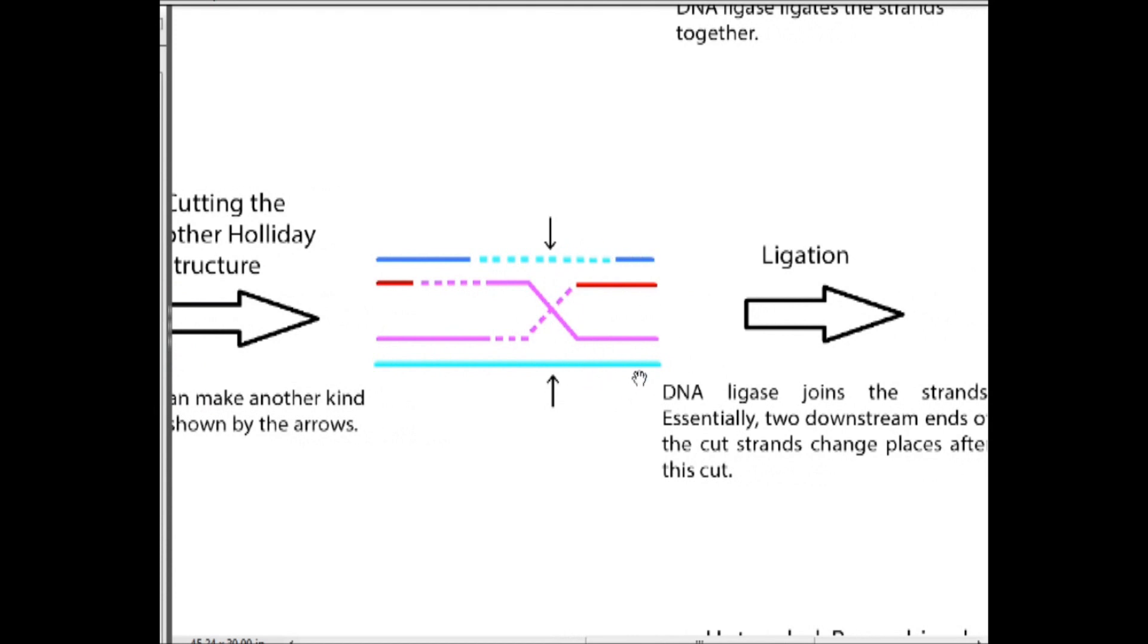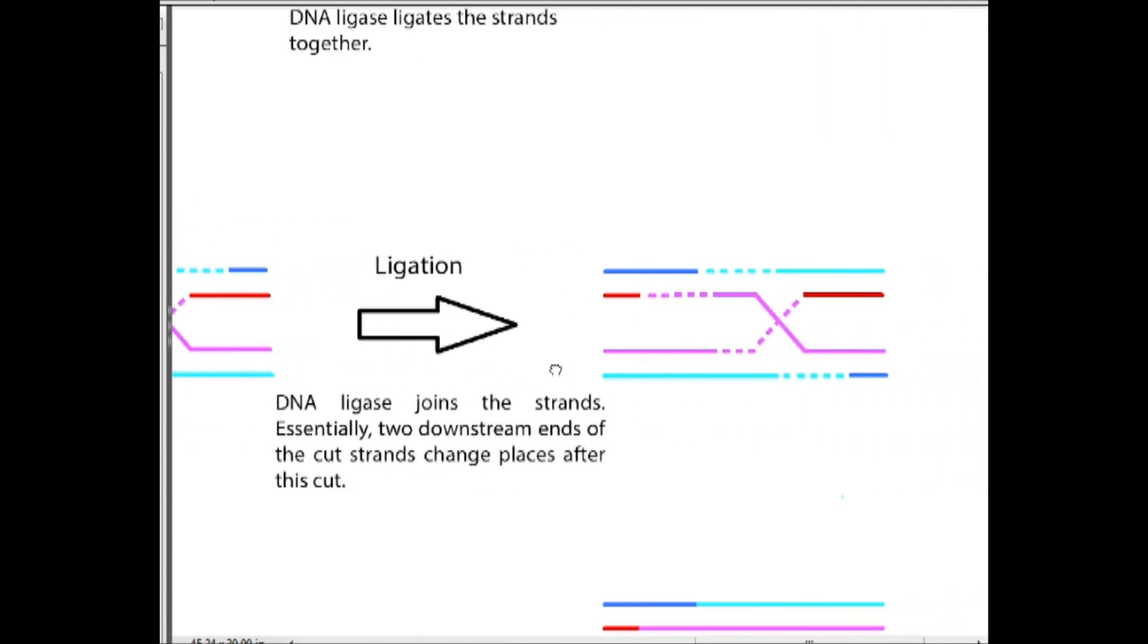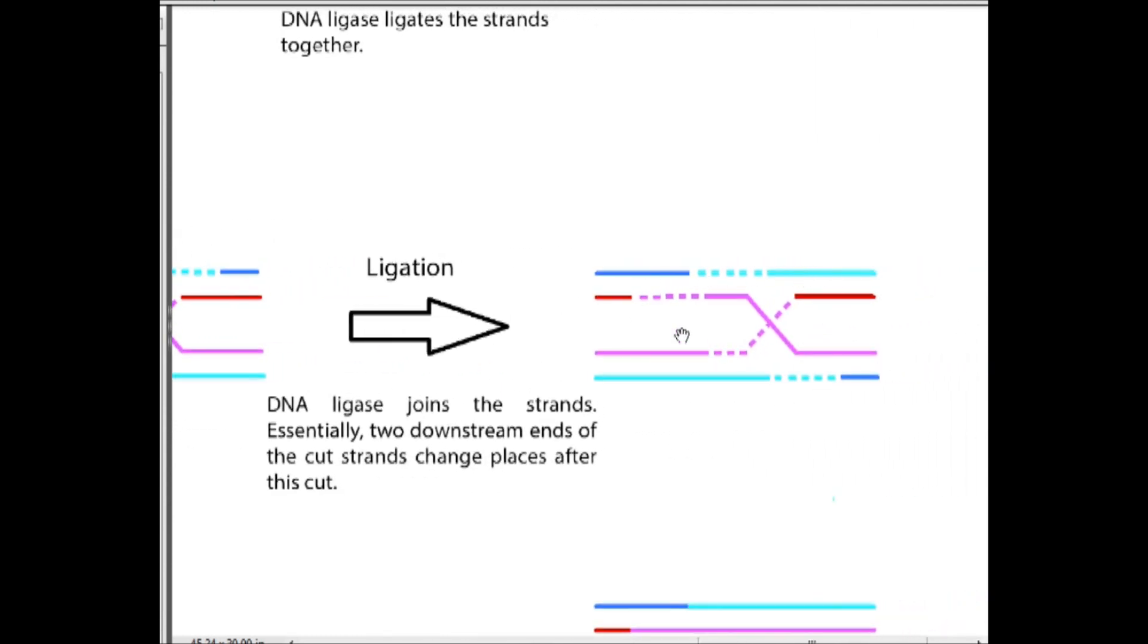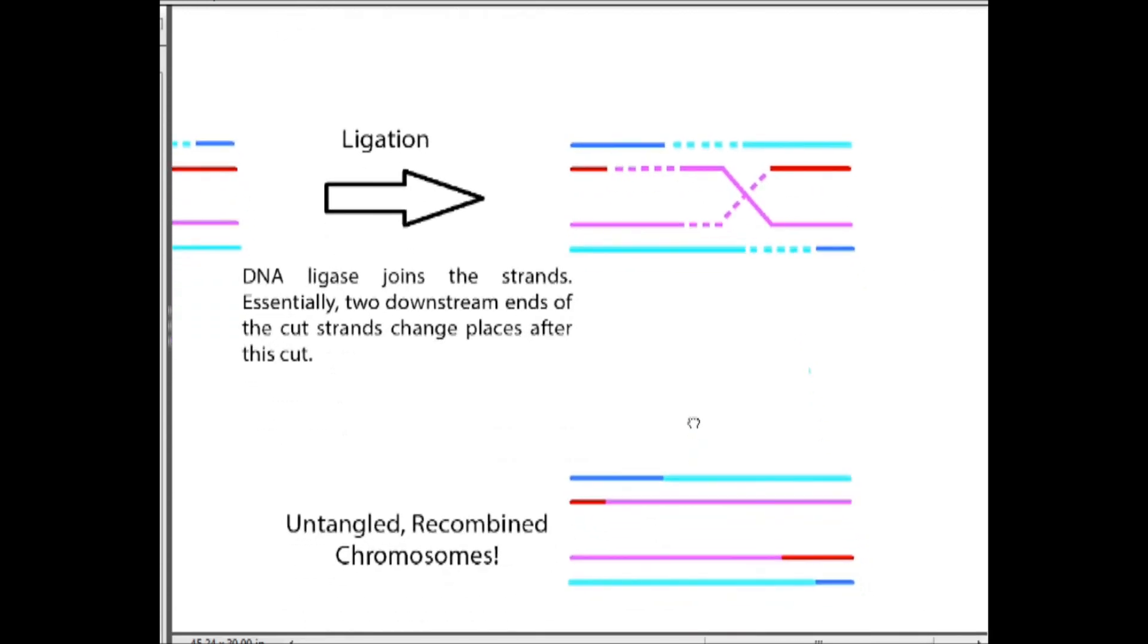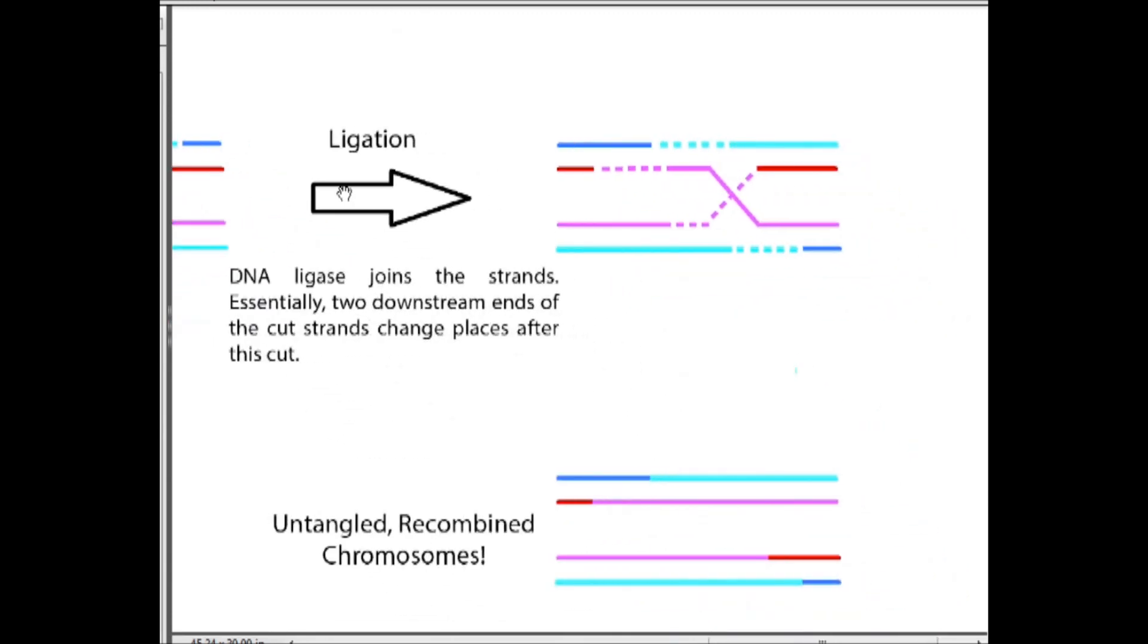Remember these ends are going to flip on over, change places essentially. We would have something that looks like this. When we untangled this, we would get recombined recombinant chromosomes that look just like this. I hope this was helpful in understanding this really important, really error-free process of DNA double-strand break repair with homologous recombination.